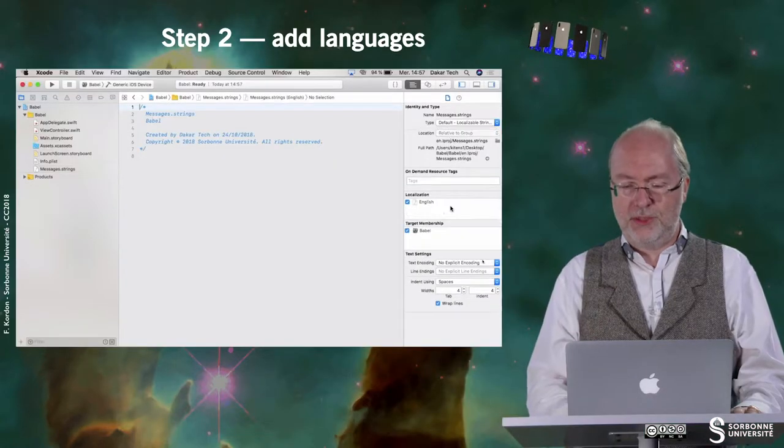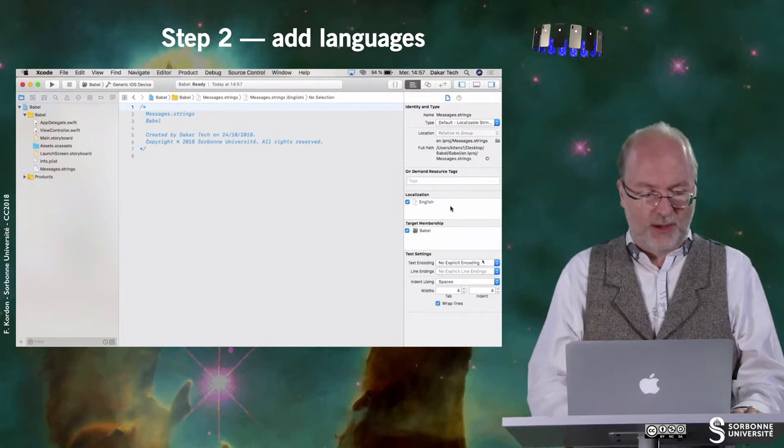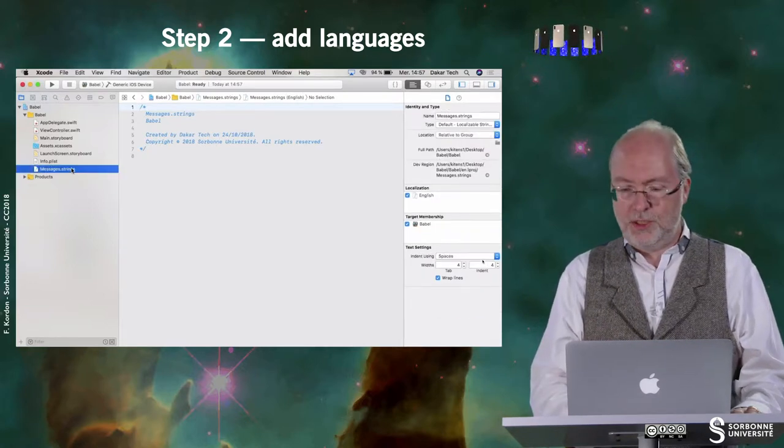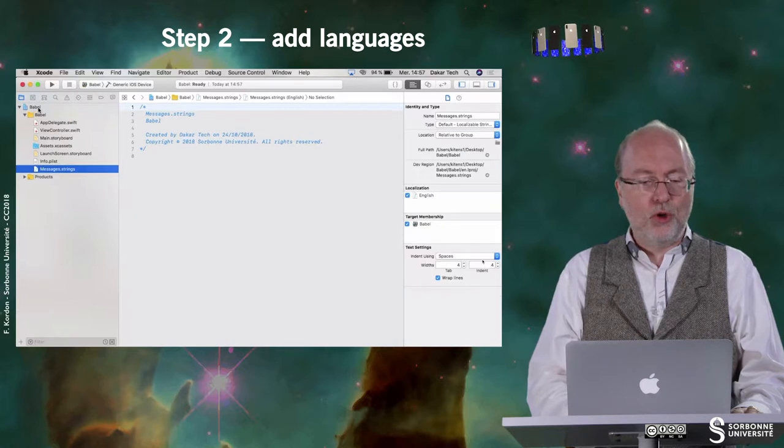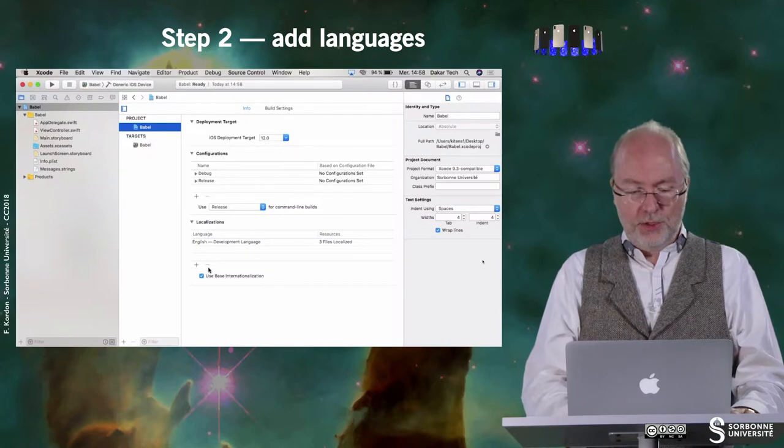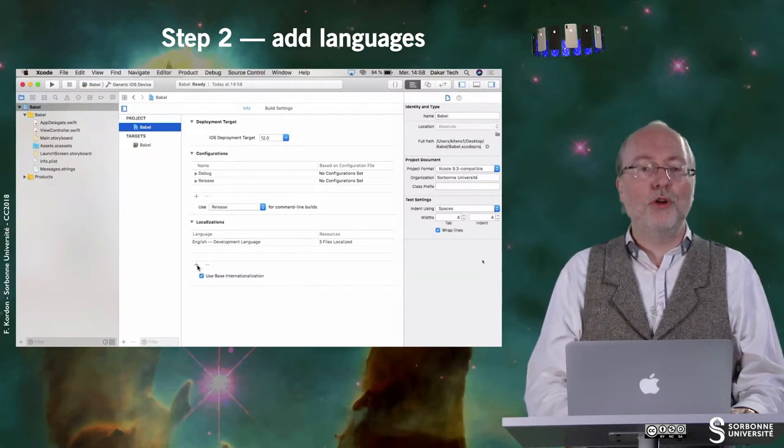So you have created this file, but you want to localize it and to add languages. So first of all, you state that it's a localized file. And then you go to the project, and on the bottom of the project, here, you can add new languages.